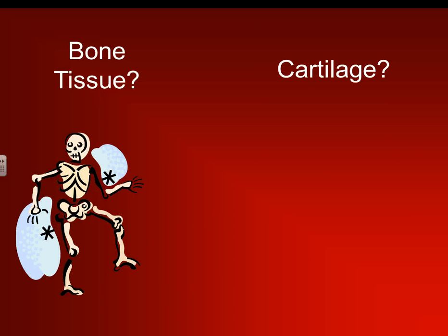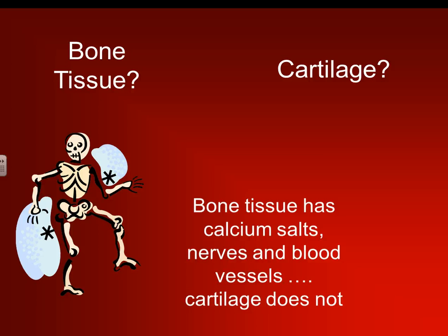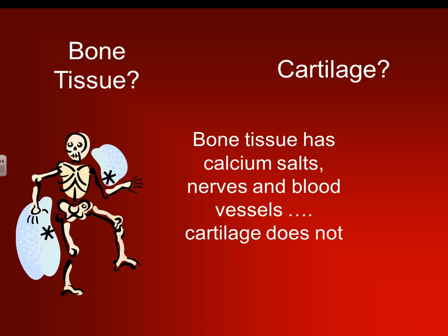So bone tissue and cartilage — bone is considered a type of tissue, and cartilage as well. The difference between the two is that bone tissue has calcium salts, nerves, and blood vessels. Cartilage does not. Bone comprises nerves and blood vessels — it is living and reproducing. Cartilage does not have any of those things; once it gets worn out or has to be removed, it does not replace itself. Bone is continually growing and replacing itself.